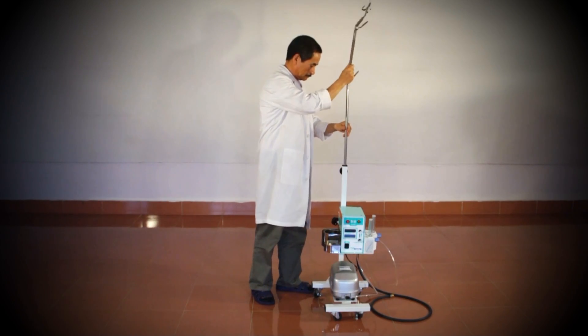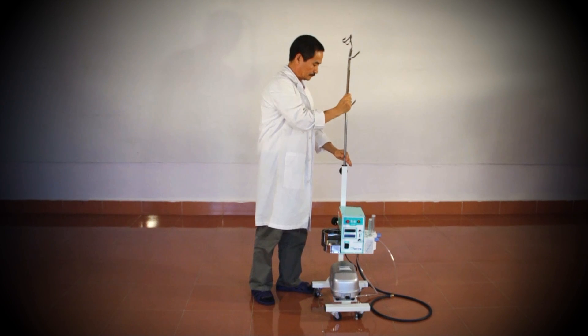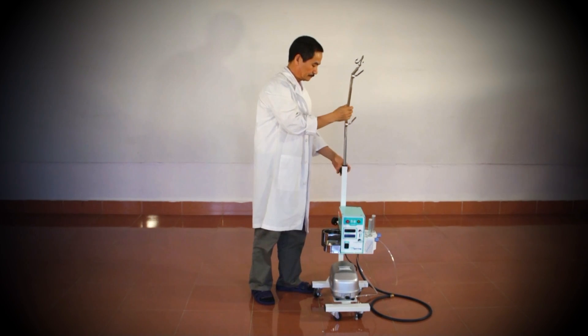Next, insert the CPAP arm into the main unit and secure it by tightening the black knob.